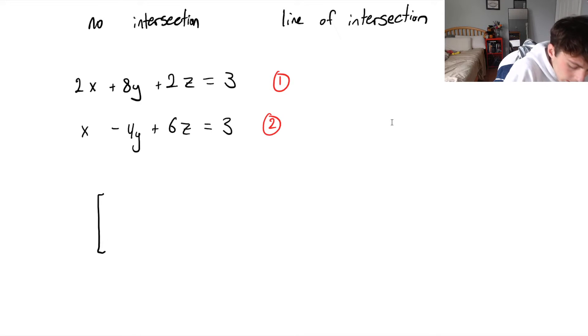So we could put this into a matrix. 2, 8, 2, and then the homogeneous side would be 3. And then, x, what am I saying? This should be 1, minus 4, 6, 3.